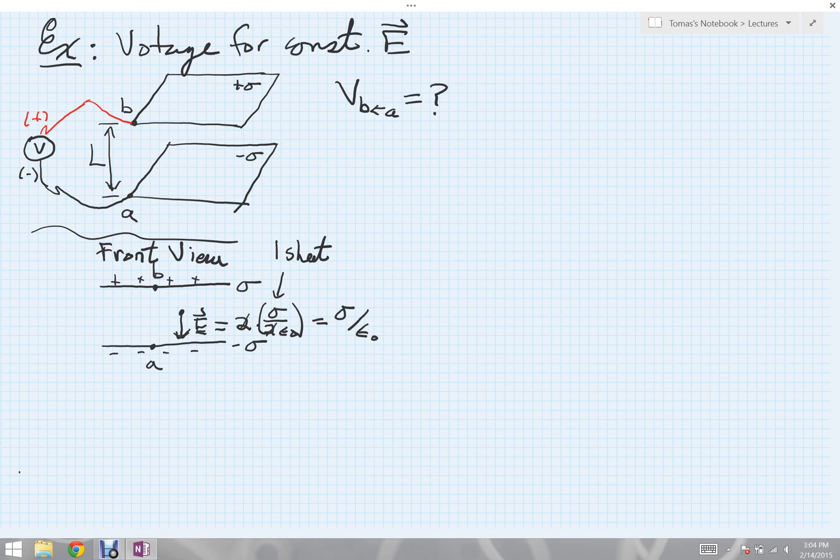Now that we know the electric field, we're in a position then to calculate the potential, the voltage. So the voltage then, in going to B from A, just copying down our definition, is minus, because it's the work done by us, because it's going to become potential energy, work we can get out later. Integrating then from the starting point A to the final point B, whatever our electric field is, dotted with our displacement. And now to evaluate this, we can go ahead and use our basic facts that we know about dot products.